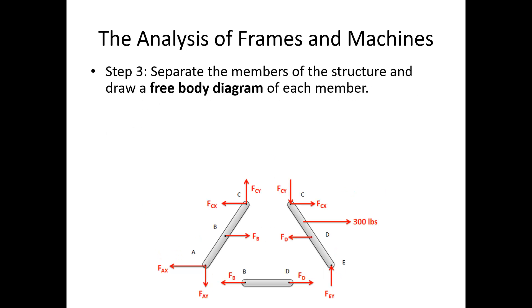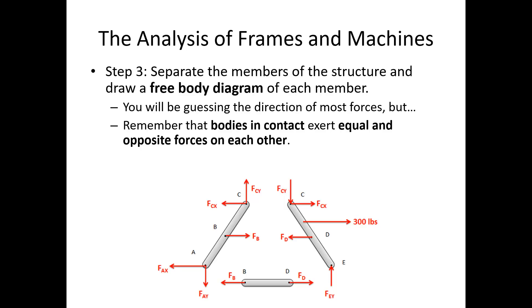Step three. Next, we are going to separate the members and the structure and draw a free body diagram of each member. Below, I've shown the free body diagram for each of the pieces. We'll be guessing the direction of most of these forces, but we're going to remember that bodies in contact exert equal and opposite forces on each other. So it doesn't really matter what direction you do for one of these. For Fcx over here, I just guessed this was to the right. But what is important is if I guess to the right over here, I need to draw the force to the left over here. So these are my Newton's third law pairs. Anywhere there's a connection, I've got a set of equal and opposite forces.